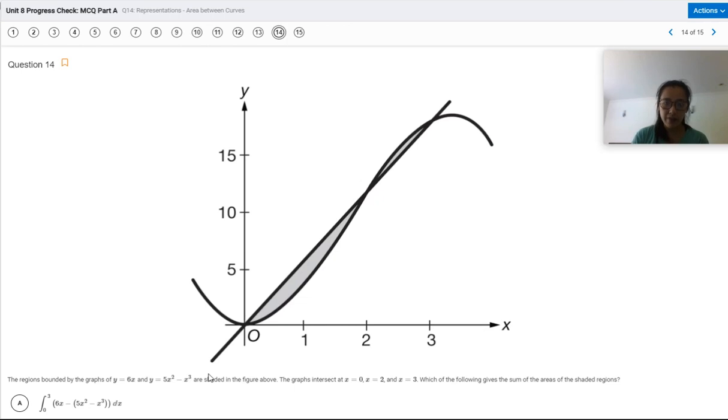Which of the following gives the sum of the area of the shaded regions? So if you're looking at this, there are two shaded regions. And as y'all should know, you do need to split these into two separate integrals. Otherwise, one of them will end up being counted as negative and then they'll offset each other and you're going to get the wrong answer.